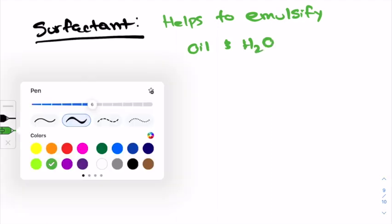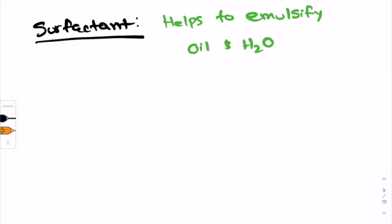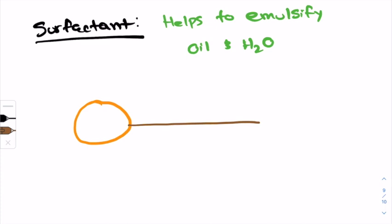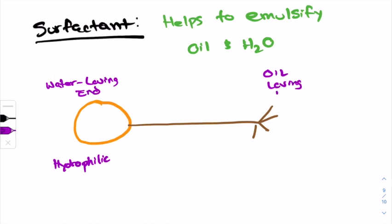So if you look at a surfactant, there's two ends to it. There's this end and then there is this end. This is the water-loving end, water-loving end, which we call hydrophilic. This is the oil-loving end, which we also call lipophilic.